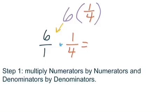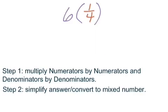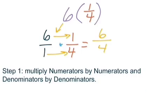We multiply numerator by numerator, denominator by denominator, and we'll get six here. Six times one is six. One times four is four, and we actually get an improper fraction. So we look at step two, simplify answer or convert to mixed number.